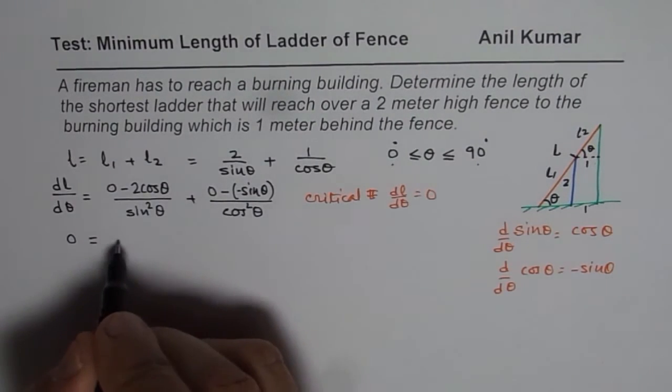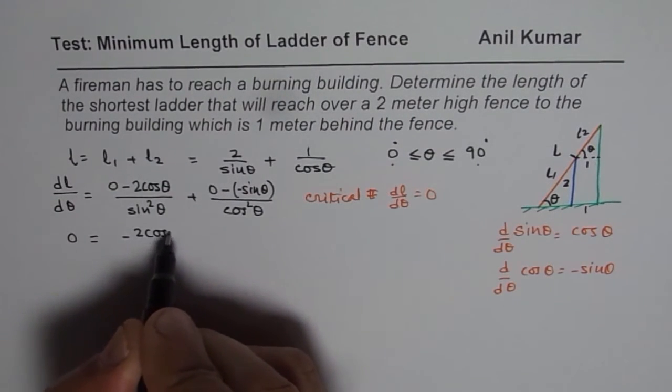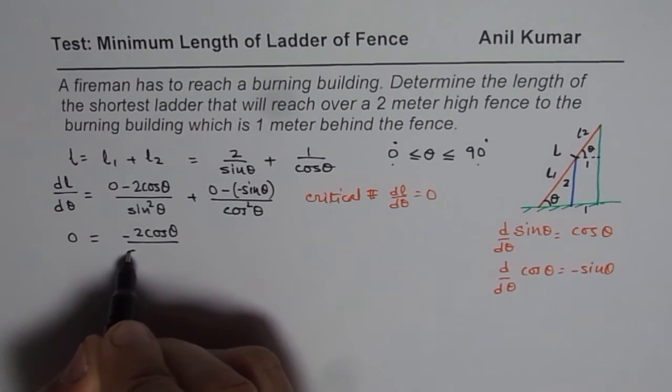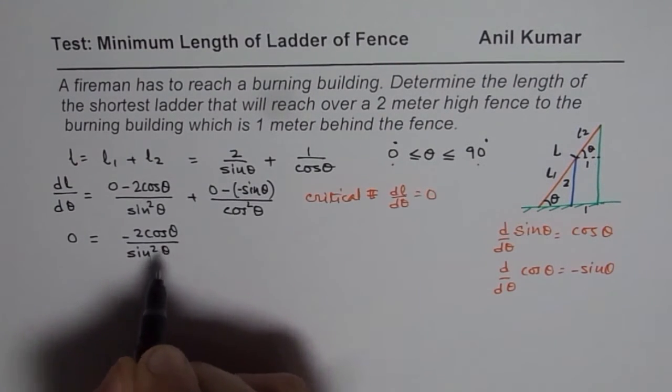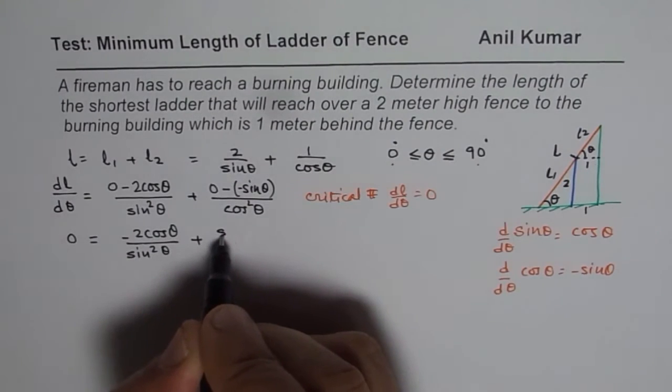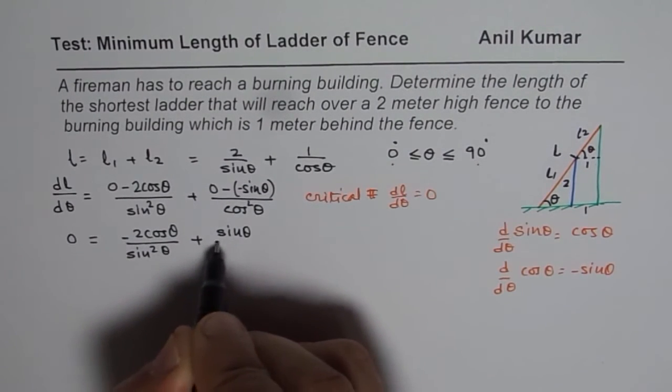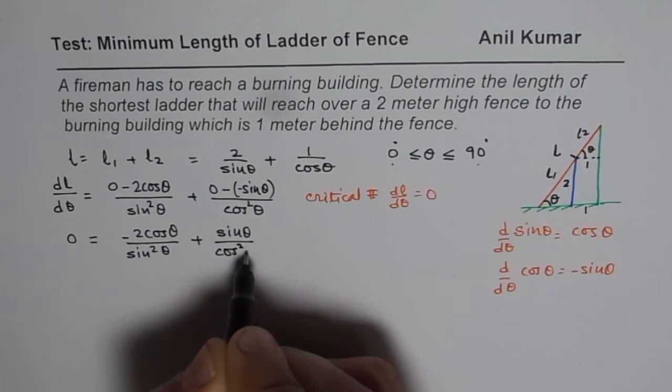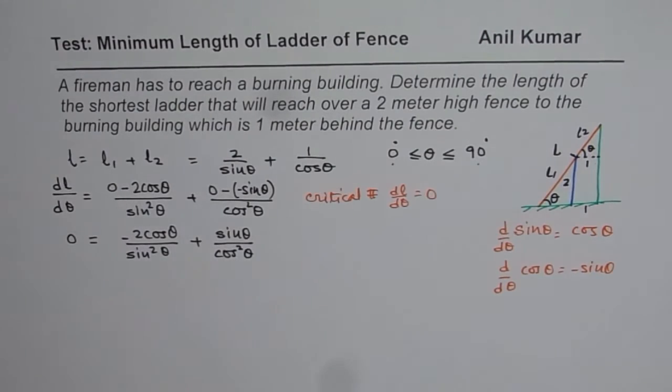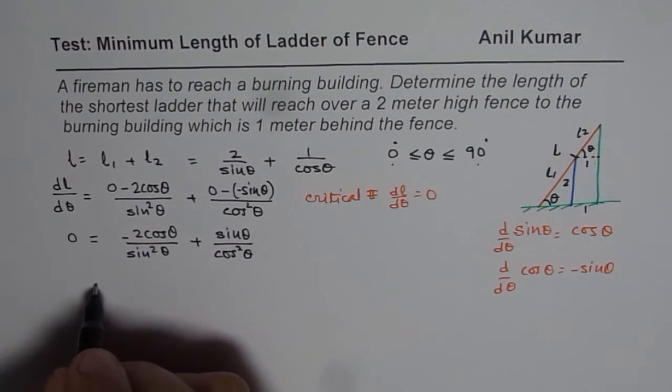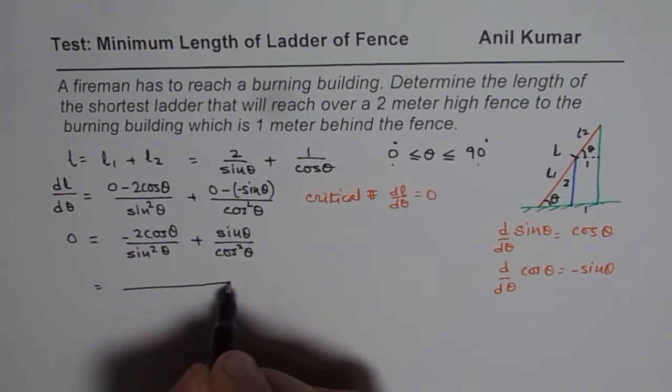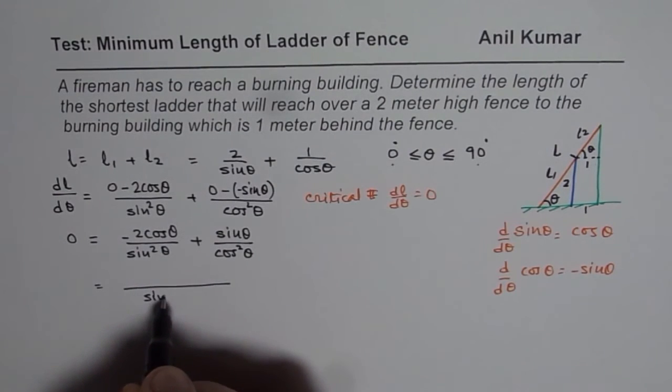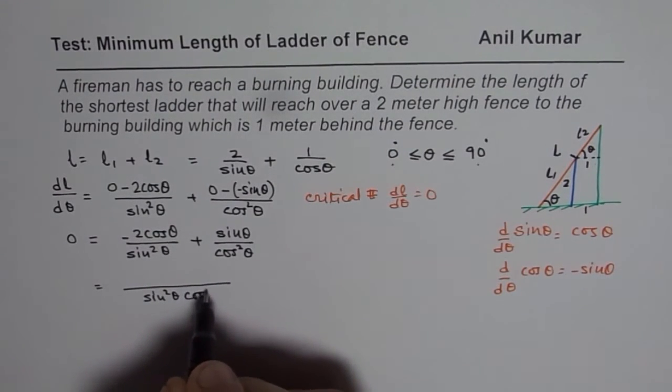So we get 0 equals to minus 2 cos theta over sine square theta plus sine theta over cos square theta. So that is what we get. Now we can take common denominator. So once we take common denominator, we get sine square theta, cos square theta.